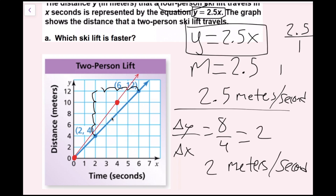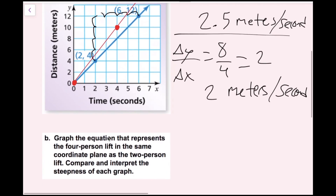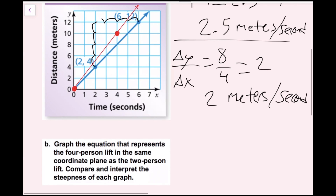We can see it is increasing a little bit faster than the two-person lift. The steepness represents the slope, which we know represents the speed of the chairlift. So now we're done with this one as well.